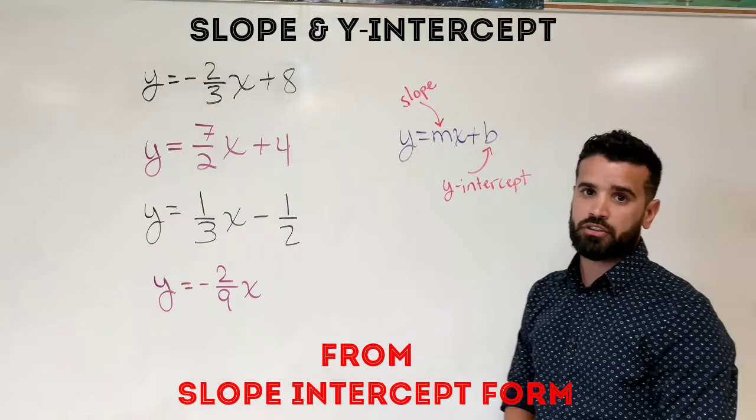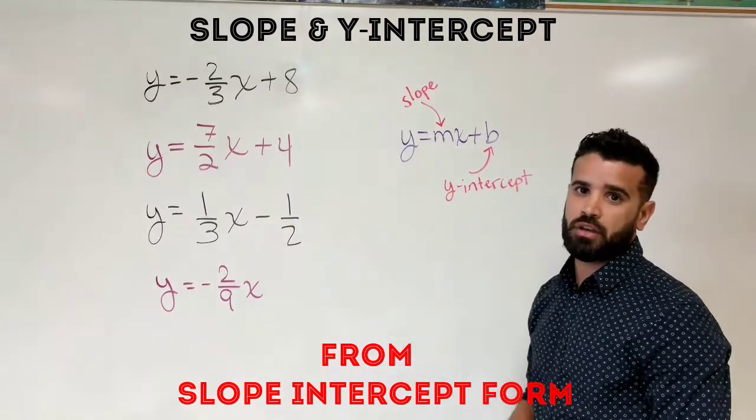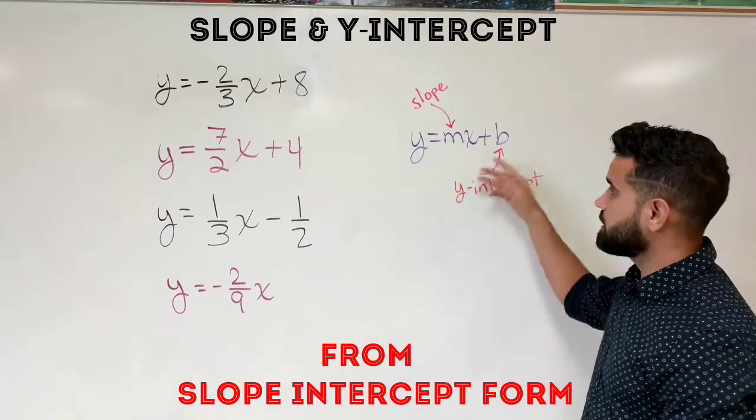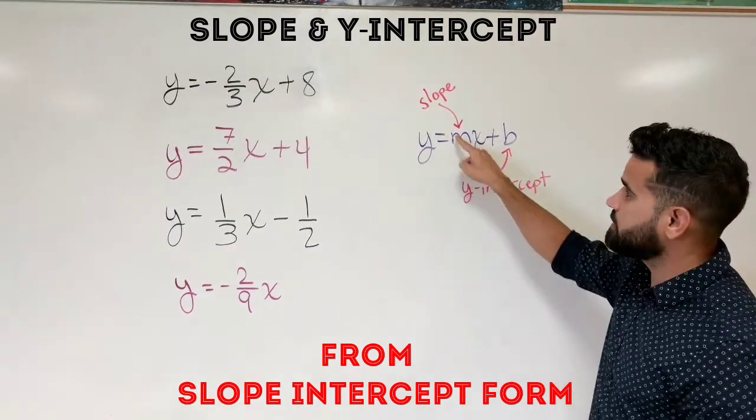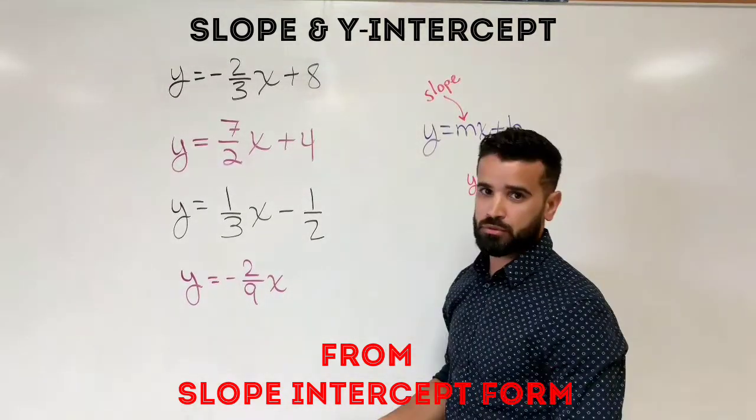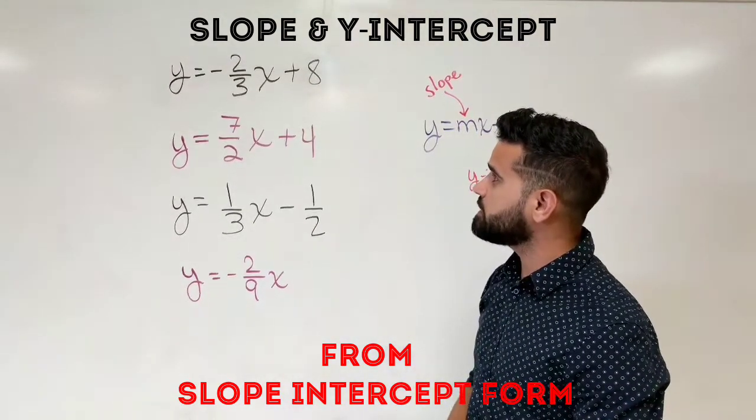How to find the slope and y-intercept when you have an equation given to you in slope intercept form. Slope intercept form means y equals mx plus b - that's the format. The m stands for slope and the b stands for the y-intercept. So let's take a look at these examples. Here, y equals negative two-thirds x plus eight.